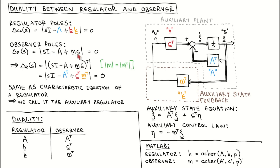When we compare the two equations, we notice that the gain K for the regulator is a row vector, whereas the gain M for the observer is a column vector, and the order of the multiplication of the system vector and the gain vector is reversed for the observer as compared with the regulator.